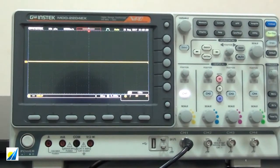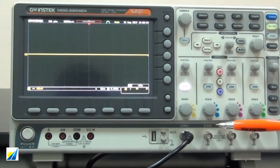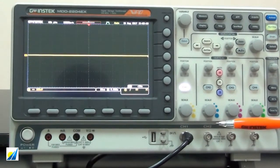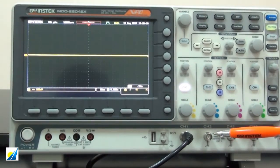First of all, connect oscilloscope Channel 1 with waveform generator Gen 1 on the rear panel by a BNC cable.